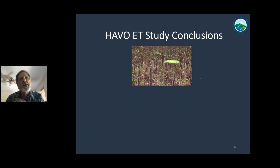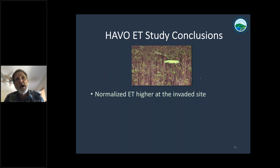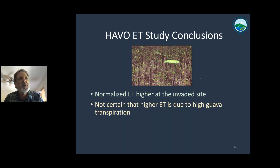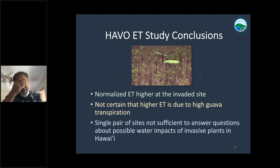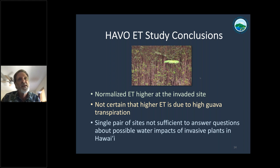What we can say so far from the ET analysis at the Hawaii Volcanoes National Park sites is that the normalized ET — evapotranspiration divided by available energy — is higher at the invaded site, but we're not certain that the higher ET is due to high transpiration by strawberry guava. This study, despite all the effort and many years put into it, is still just a single pair of sites, and not very well-controlled sites at that. This study alone is not sufficient to really answer the questions about possible impacts of invasive plants in Hawaii.